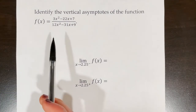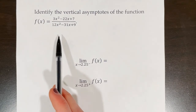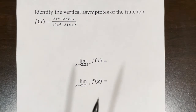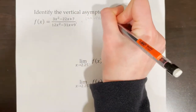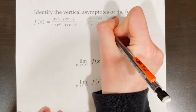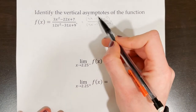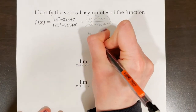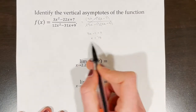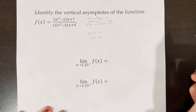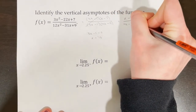To identify the vertical asymptotes of f(x) = (3x² − 22x + 7) / (12x² − 31x + 9), we need to factor first. After factoring, there is a hole at 3x − 1 = 0, or at x = 1/3. A hole is not the same thing as a vertical asymptote, so what remains in this function is (x − 7) / (4x − 9).